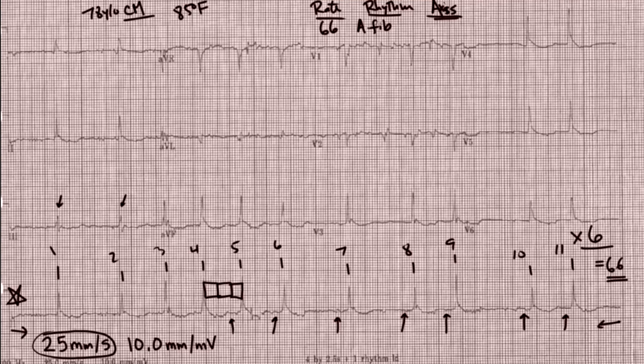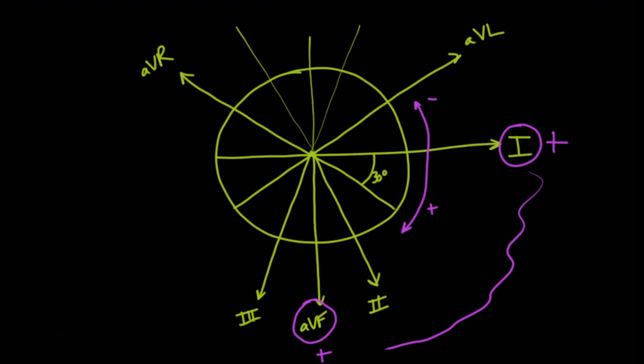We're going to look at lead one, which is right here, and we're going to look at AVF, which is down here. Notice that in AVF and in one, we both have a positive QRS complex. So what does that mean? That means that our axis is going to be somewhere in this quadrant, which is normal. That's where it should be.